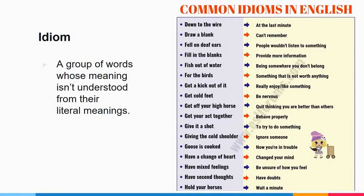An idiom is a group of words whose meaning isn't understood from their literal meanings — in order to understand idioms, you have to know what they mean. For example, fish out of water: literally it seems like there's a fish not in water, but it's actually a phrase people use about being somewhere you don't belong.